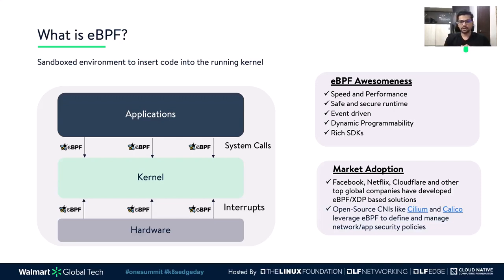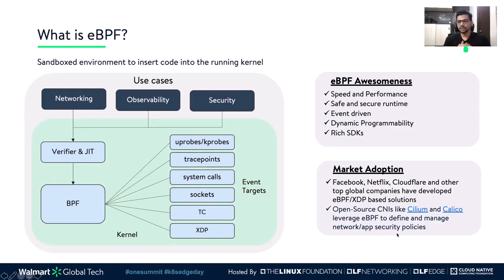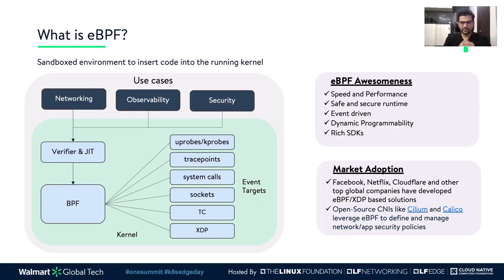eBPF has out-of-the-box integrations with low-level network hooks such as XDP and TC, as well as probing mechanisms such as K-probes, U-probes, and trace points. eBPF also provides a safe and secure way to write efficient programs and run them in the kernel. The verification step ensures the eBPF program is safe to run, validating that the program does not crash and always runs to completion without infinite loops.